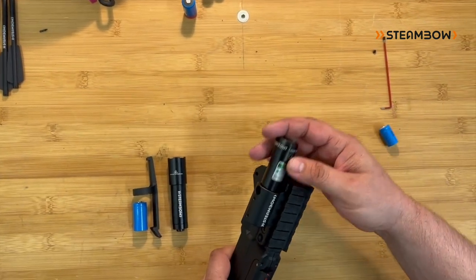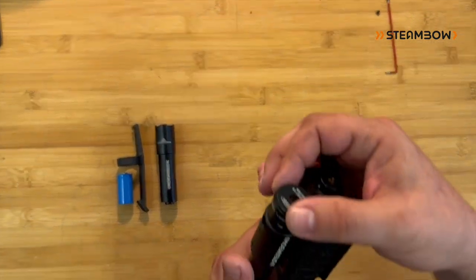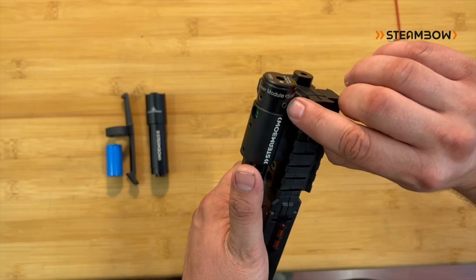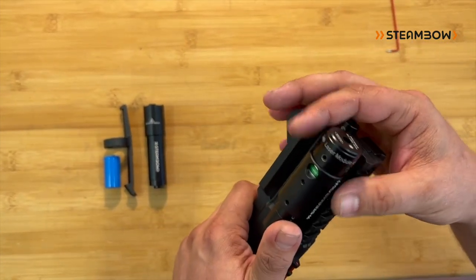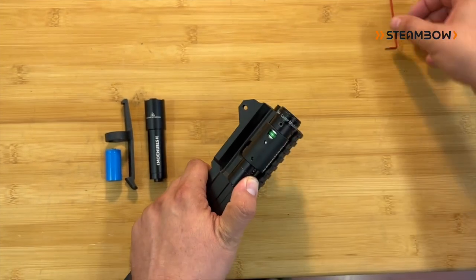The laser unit is just inserted from the front. Here you have to see that there is one screw upwards and one sideways. This is important later for adjusting the laser. We will show that in a separate video.